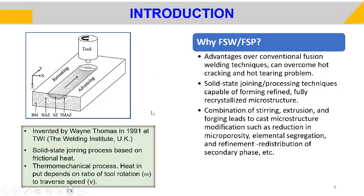Friction stir welding is basically a solid state joining process which was invented at the Welding Institute in UK around 1991. This is also a thermo-mechanical process because there is a lot of heating that occurs and there is severe plastic deformation that goes into the work piece.